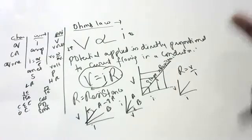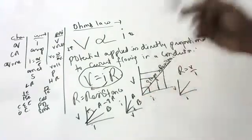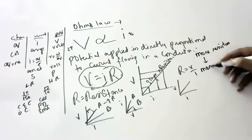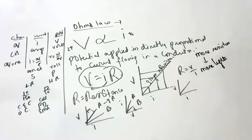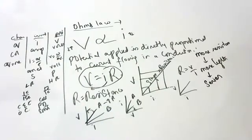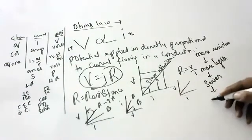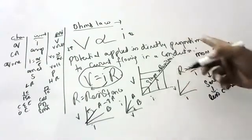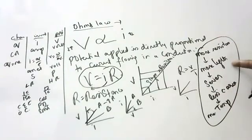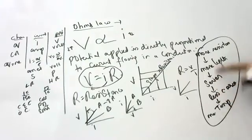More resistance also means more length, less cross-sectional area, and more temperature. These are all equivalent ways to express higher resistance. The opposite — less resistance — means less length, more cross-sectional area, and lower temperature.